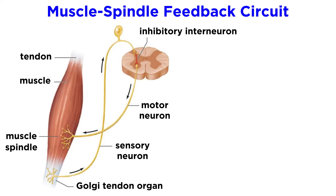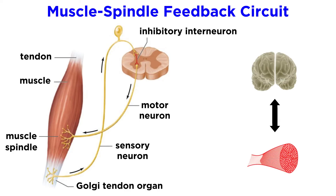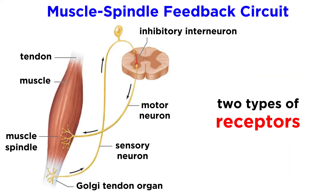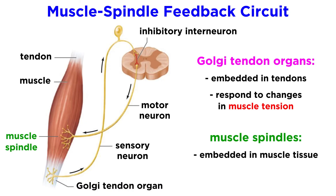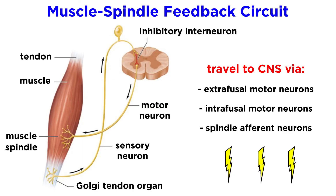Let's briefly discuss the muscle spindle feedback circuit — the way the muscles and the brain communicate. Within the skeletal muscles, we can find two kinds of receptors: Golgi tendon organs and muscle spindles. Golgi tendon organs are embedded in the tendons, which connect the muscle to a bone, and these respond to changes in muscle tension. Muscle spindles are embedded in the muscle tissue and they respond to changes in muscle length. Information travels from these receptors to the central nervous system via extrafusal and intrafusal motor neurons and spindle afferent neurons, depending on their origin.